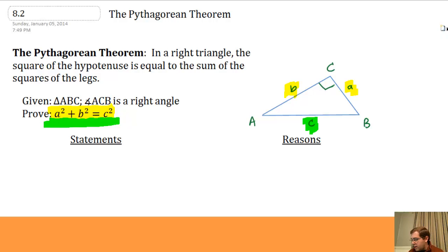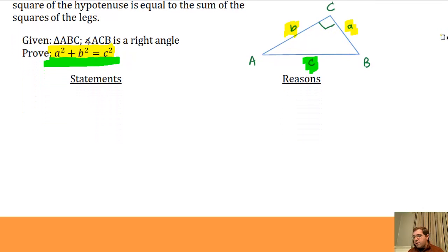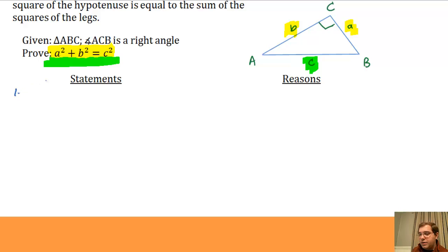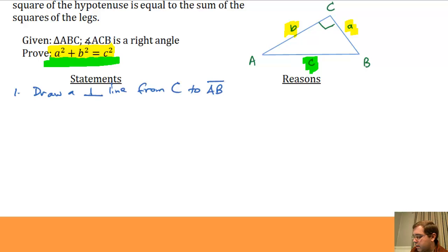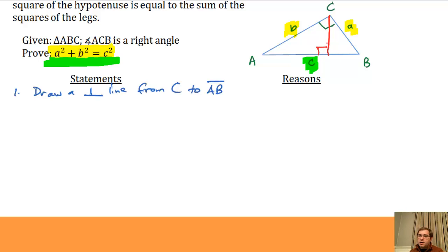To prove the Pythagorean Theorem, we start with any right triangle and prove we can get that equation using the sides of that right triangle. Here's the way we're going to prove it — write this proof in your notes. We're going to draw a perpendicular line from point C to side AB. That's called an altitude — a perpendicular line from a corner of a triangle to the opposite side. I'm going to draw the altitude from C to AB, which looks like the line I've drawn there in red.